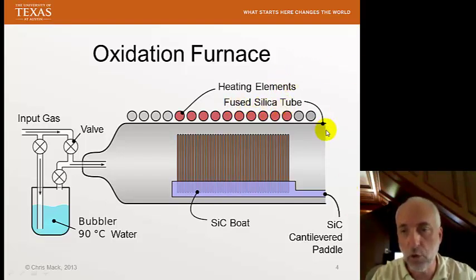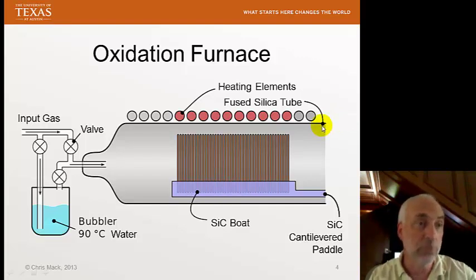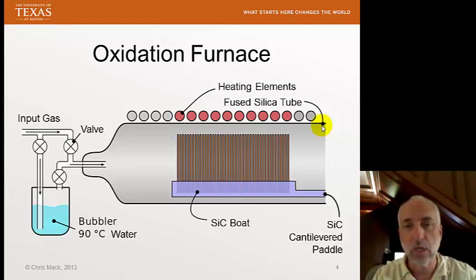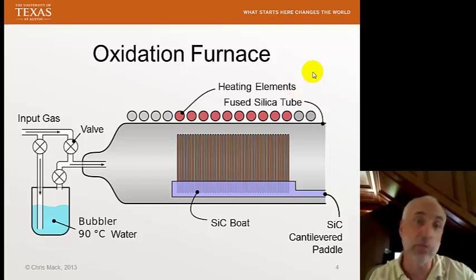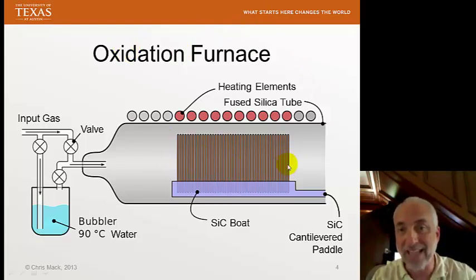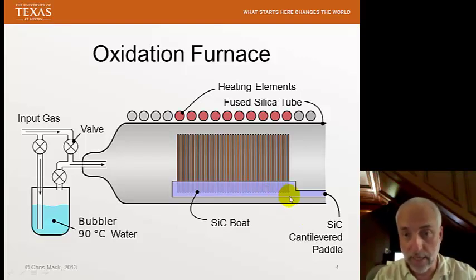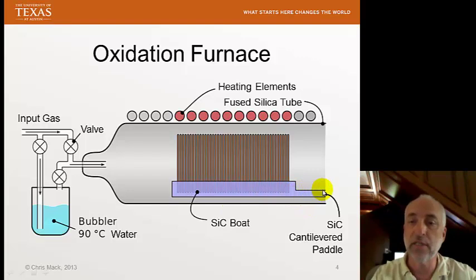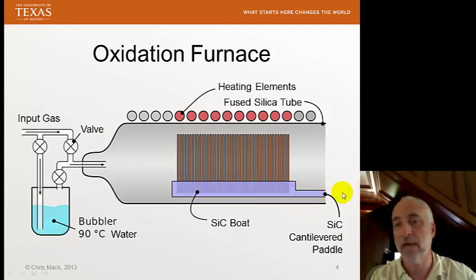We begin with a fused silica tube — that's the tube we're going to put our wafers in. Most people call it a quartz tube, but it's not really quartz; it's not a crystalline material, it's actually amorphous, which is fused silica. This fused silica can withstand very high temperatures, and we're going to perform this oxidation at temperatures up to 1200°C. The wafers are loaded in a boat, stacked vertically, fitting 25, 50, or 100 wafers in a row. The boat is silicon carbide — a material that can withstand high temperatures without reacting. The boat is attached to a long cantilevered paddle that allows us to insert the boat of wafers into the tube without touching the tube.